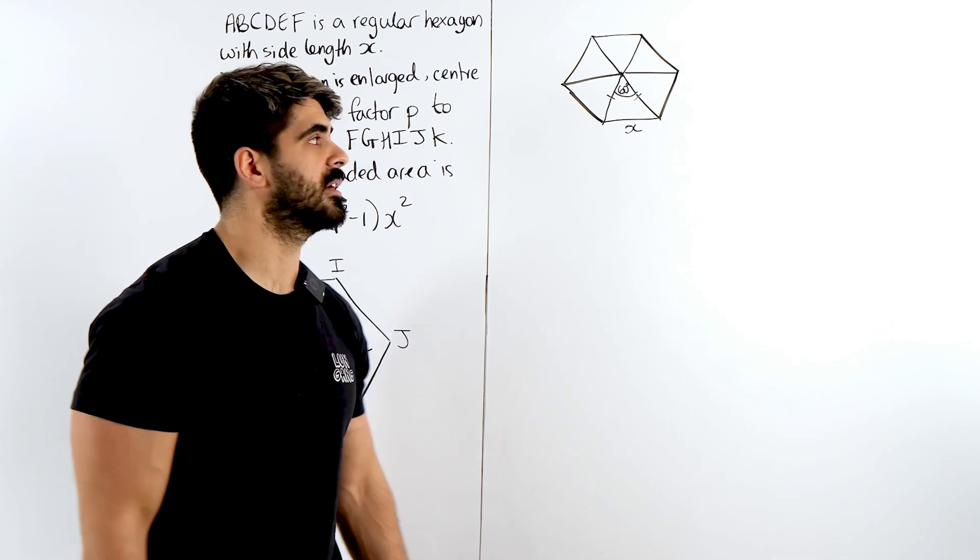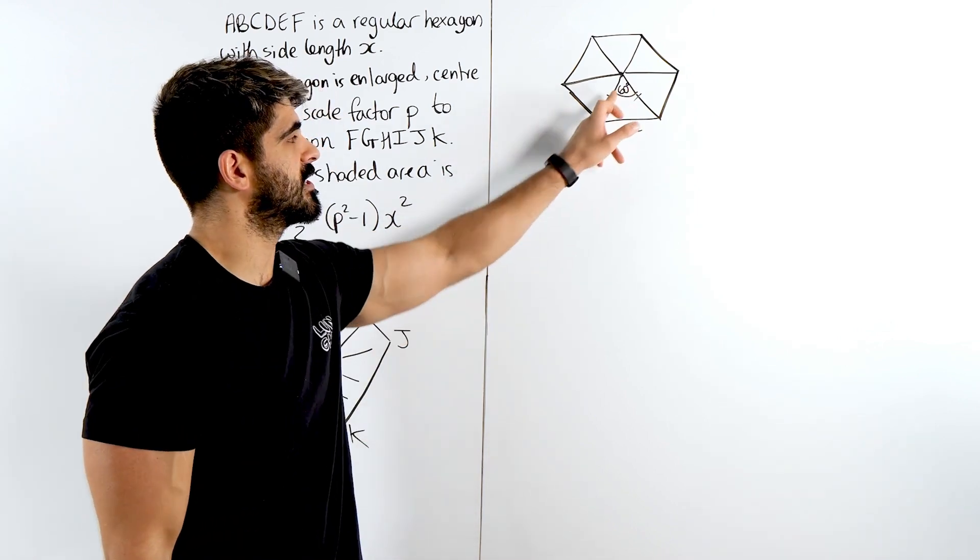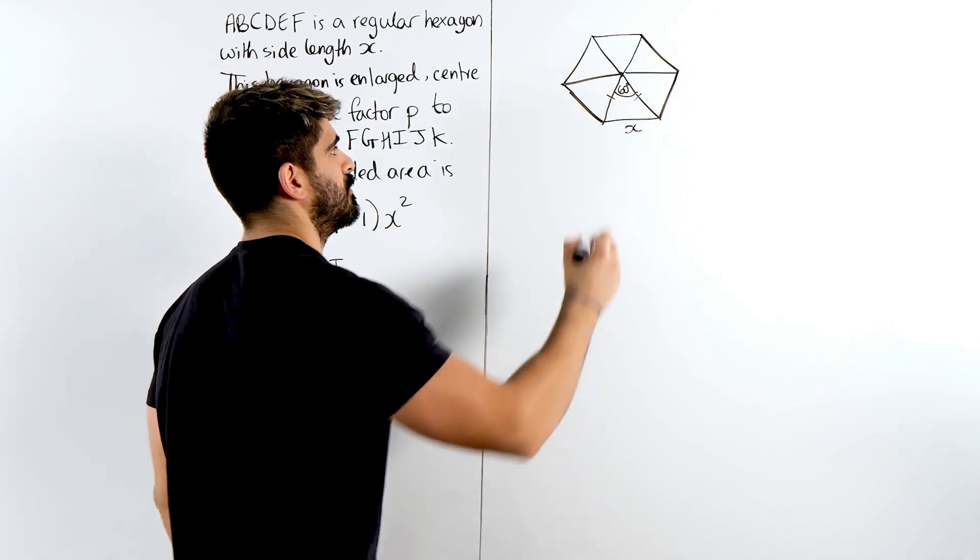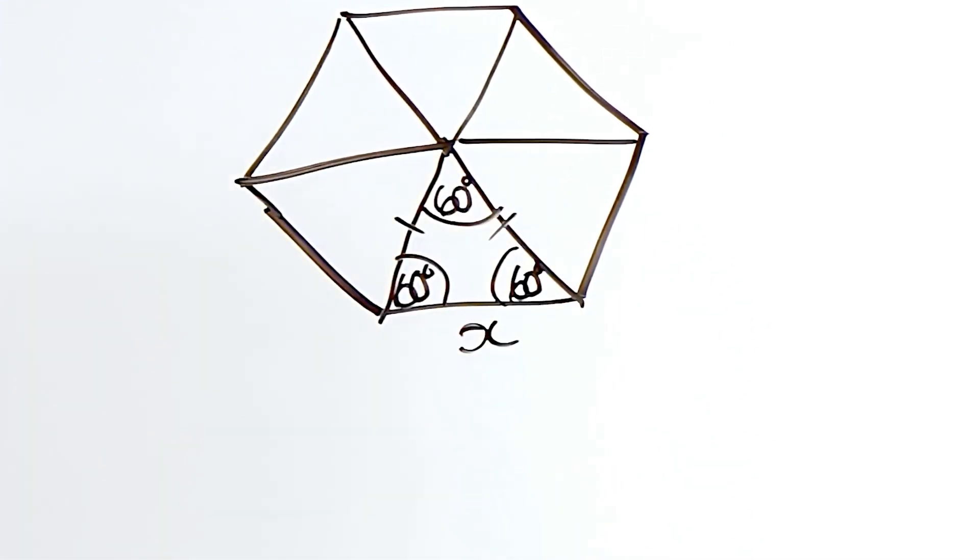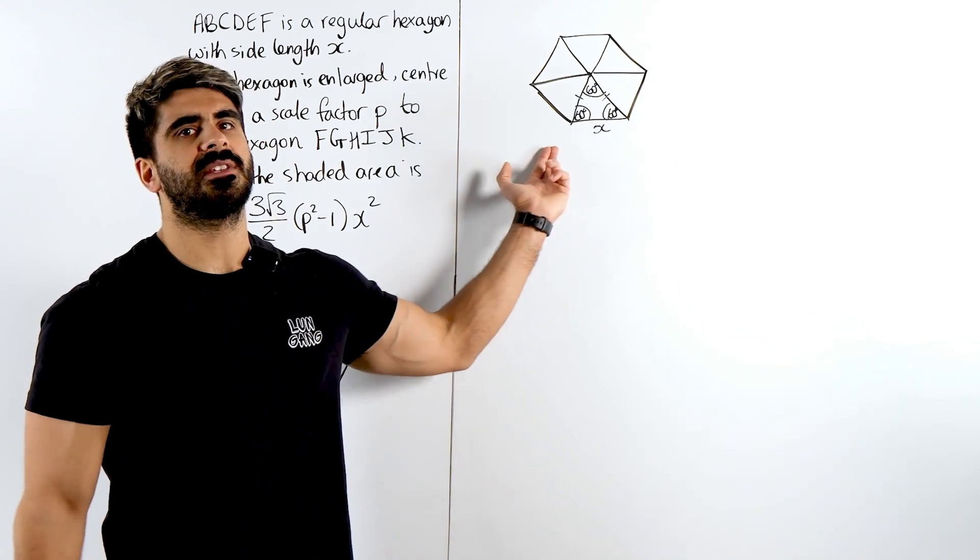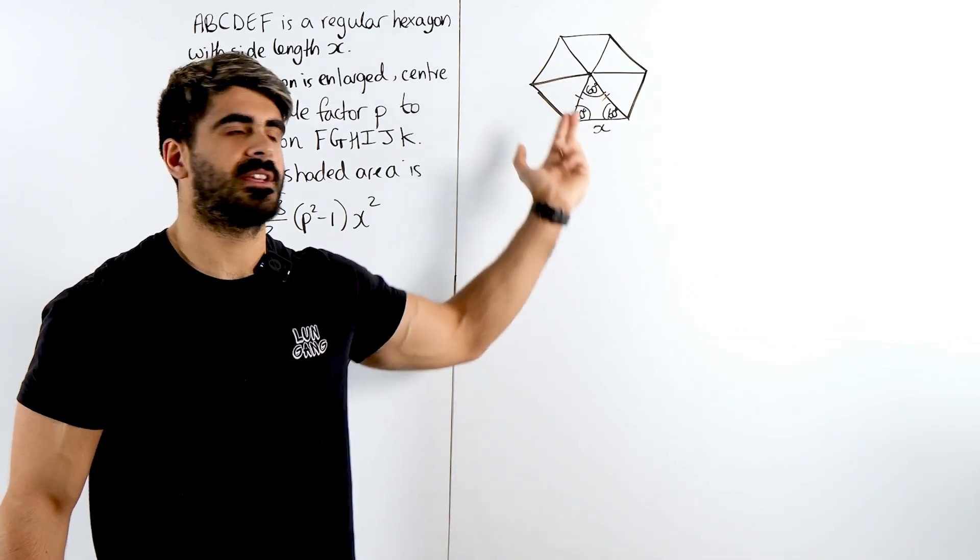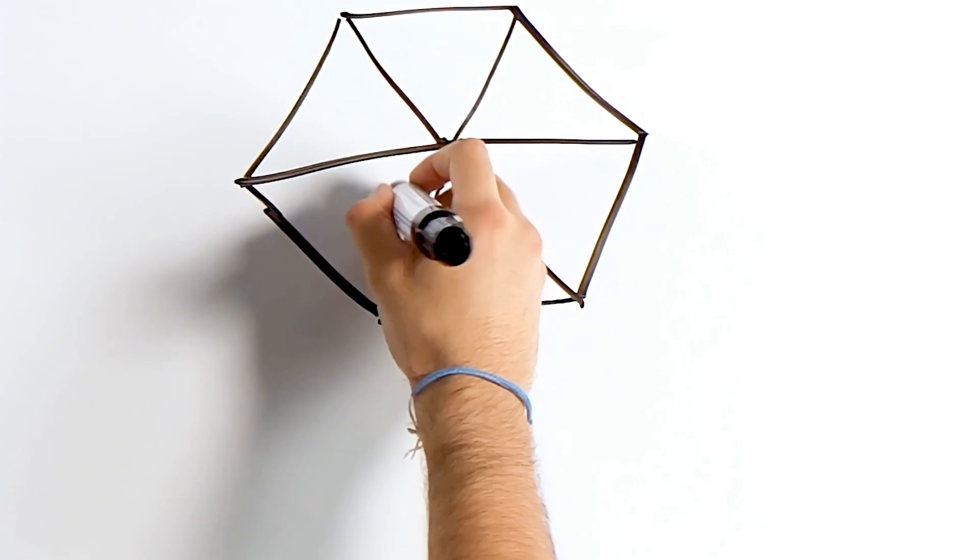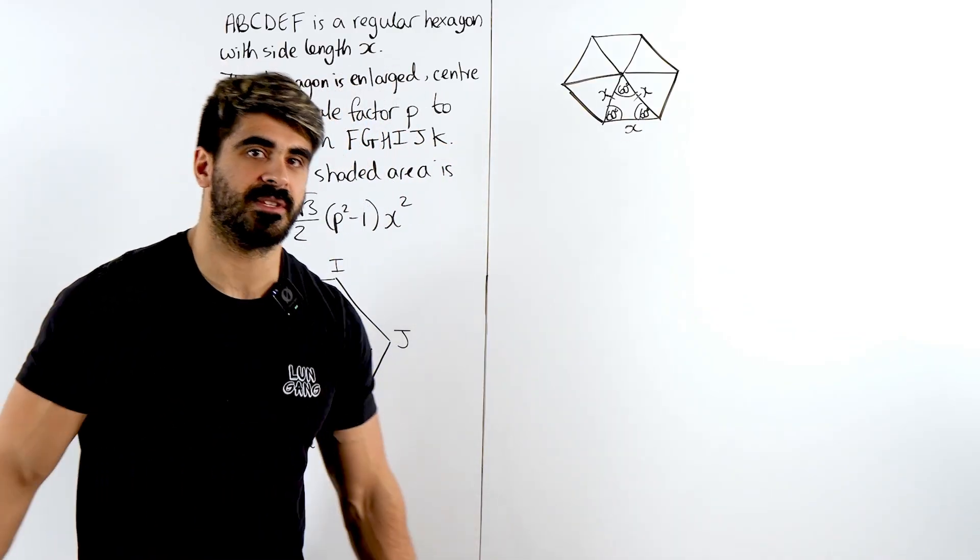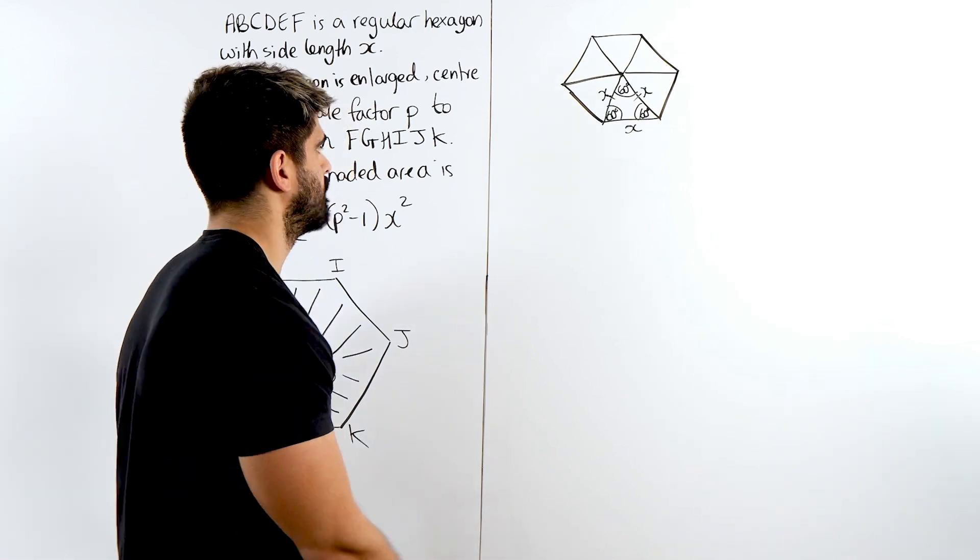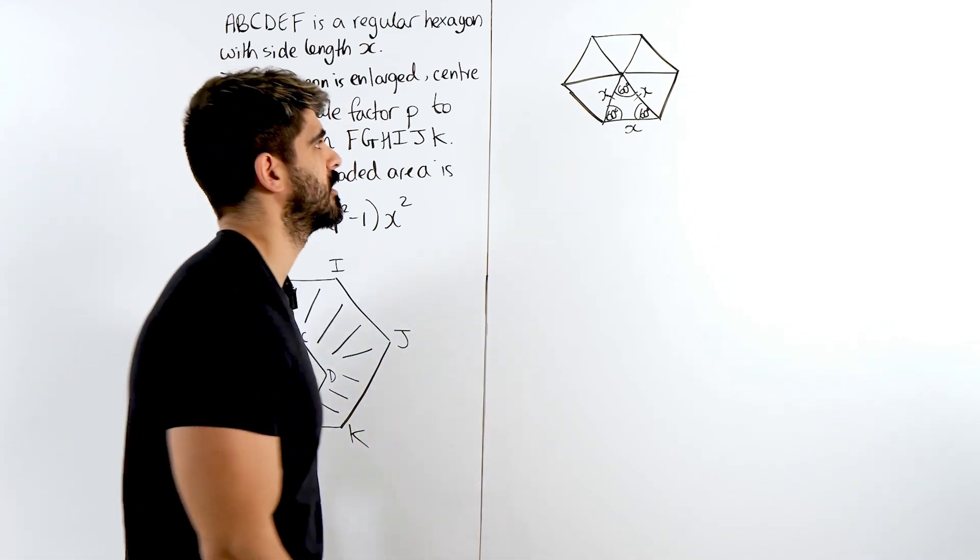But I never want you guys to assume. So this 60, both of these base angles would be 60. Well then, if it is equilateral, it means all the side lengths are the same. So all of these are X. And now we can find this area by doing half AB sine C. This is non-calculator, by the way. For sure, I don't think it would be a calculator question anyway.